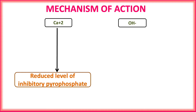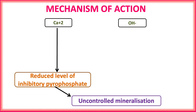The pyrophosphatase enzyme is very important for osteoblastic activity. Calcium hydroxide reduces inhibitory pyrophosphatase and increases the level of pyrophosphatase enzyme, resulting in mineralization by increasing osteoblastic activity.